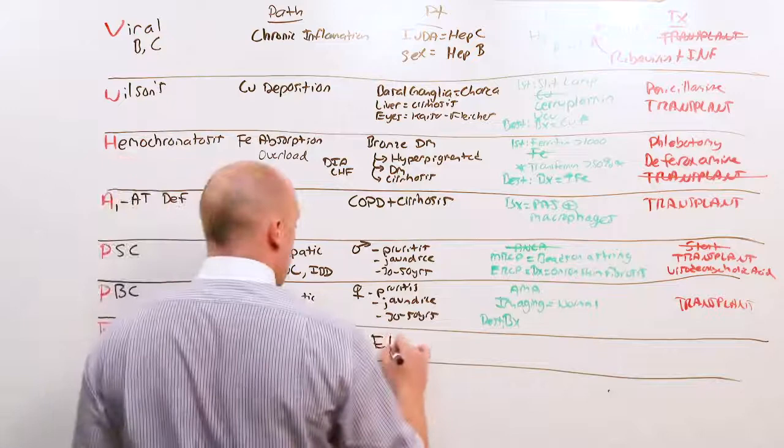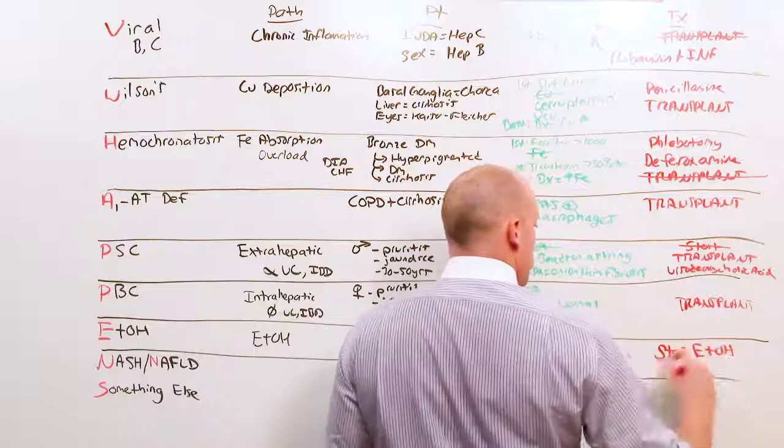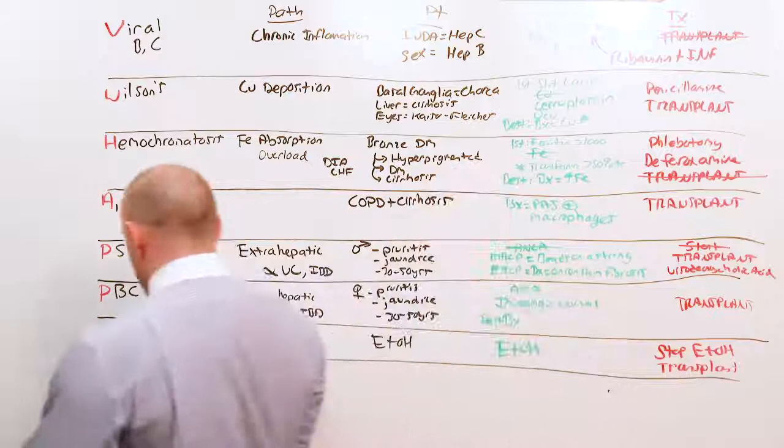Alcoholic cirrhosis is caused by alcohol, chronic alcohol use. They're going to have a long history of alcohol use. You're going to say, hey, did you drink alcohol in your life? They're going to say yes. And you say, well, you've got cirrhosis. You should probably stop doing that. And if they stop doing that, which is one of the criteria for a transplant, a transplant is curative.